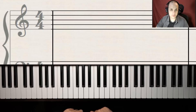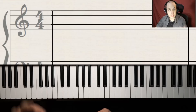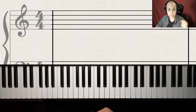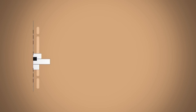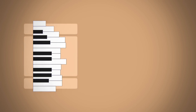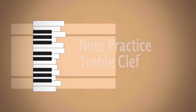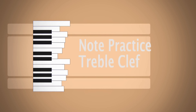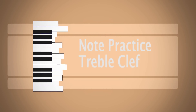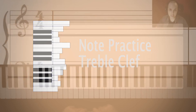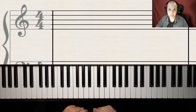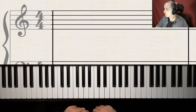I'm going to draw a note on the staff and we're going to go over together what note it is. We're going to first start out with the treble clef, doing notes on the staff, and then we're going to do some notes off the staff with the ledger lines as well. So let's get into it.